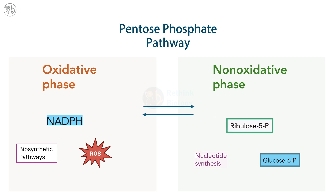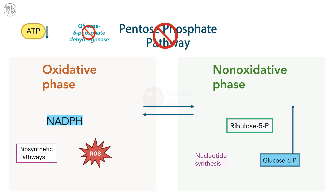Third, if ATP levels in the cell are low, then the enzyme glucose 6-phosphate dehydrogenase is inhibited, which shuts down the pentose phosphate pathway so that glucose 6-phosphate can be metabolized directly by the glycolytic pathway.